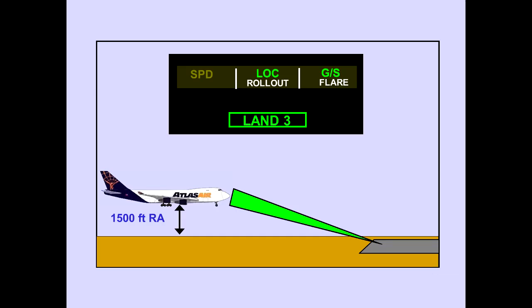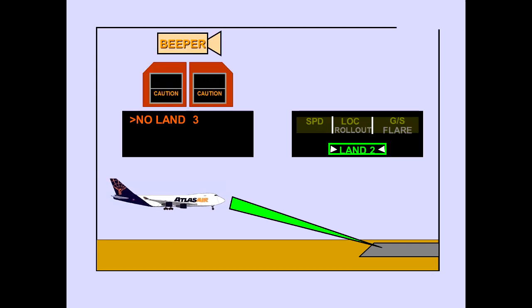Below 1,500 feet radio altitude, LAND 3 is displayed if all three autopilots are functioning normally. The ICAS caution message, NO LAND 3, indicates that one of the three autopilot systems has failed. LAND 2 is displayed on the PFD.